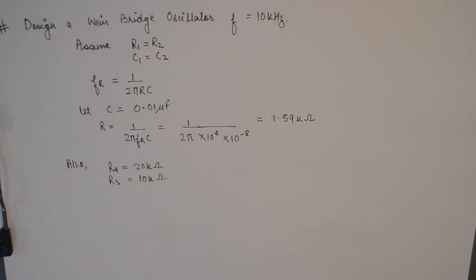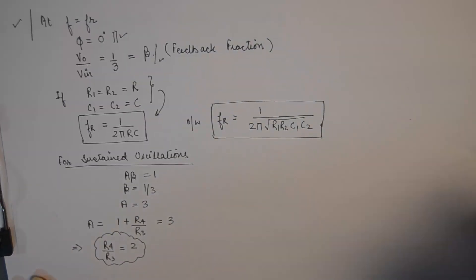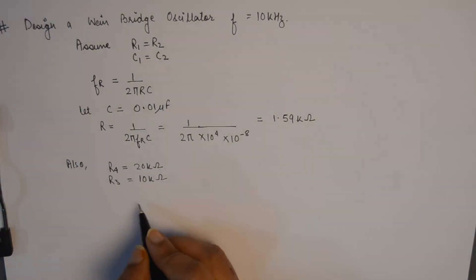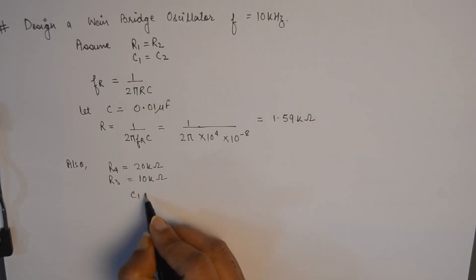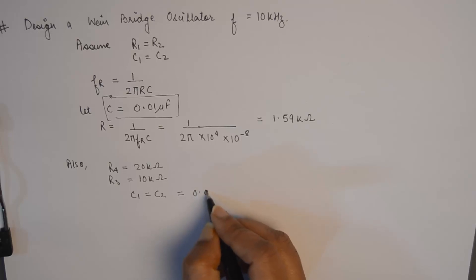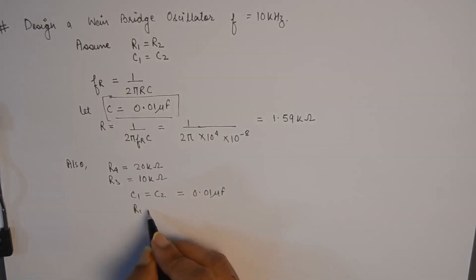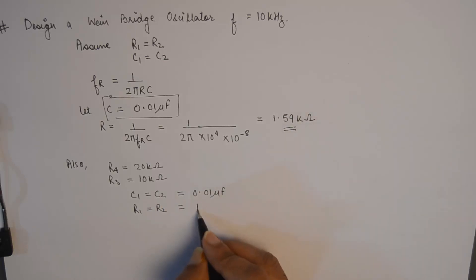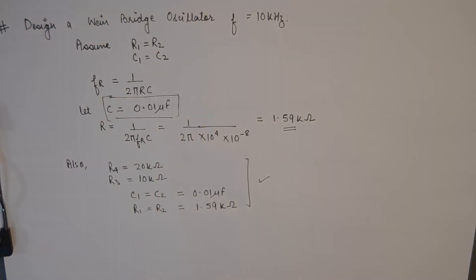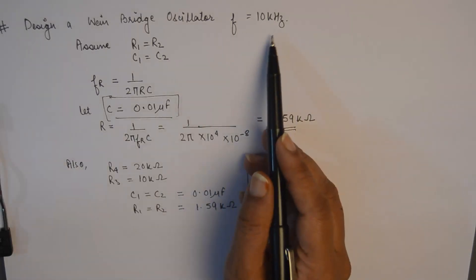That becomes the value of R. For the remaining two resistances, we can assume R4 is 20 kilo ohms and R3 is 10 kilo ohms, satisfying the ratio R4/R3 equal to 2. So the Wien Bridge oscillator can be designed by taking C1 equal to C2 equal to 0.01 microfarad, R1 equal to R2 equal to 1.59 kilo ohms, R3 equal to 10 kilo ohms, and R4 equal to 20 kilo ohms. Putting these values in the feedback RC circuit, we design a Wien Bridge oscillator operating at a resonant frequency of 10 kilo hertz.